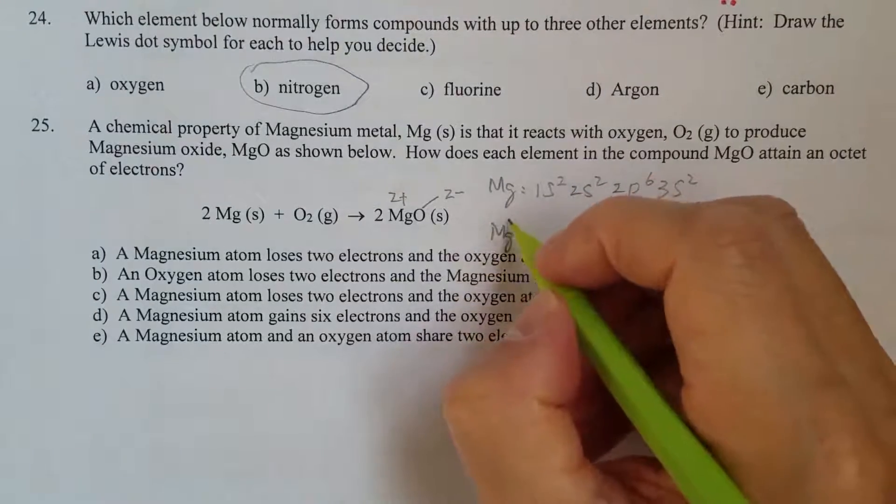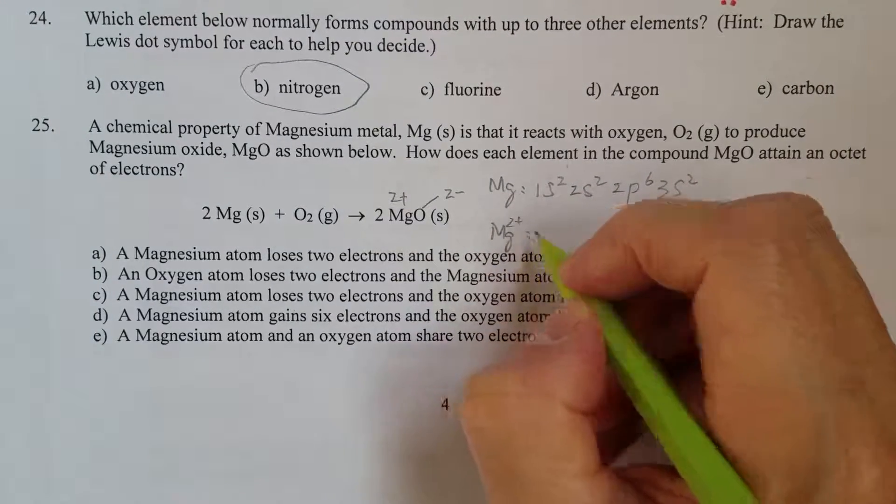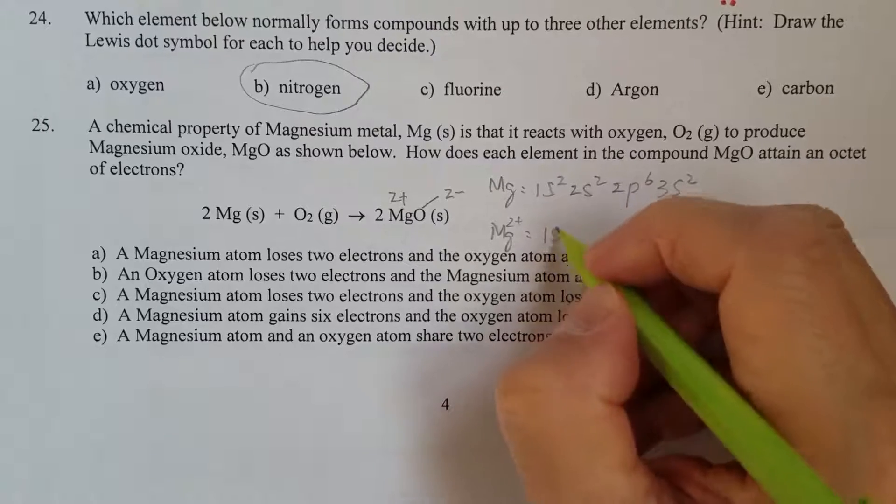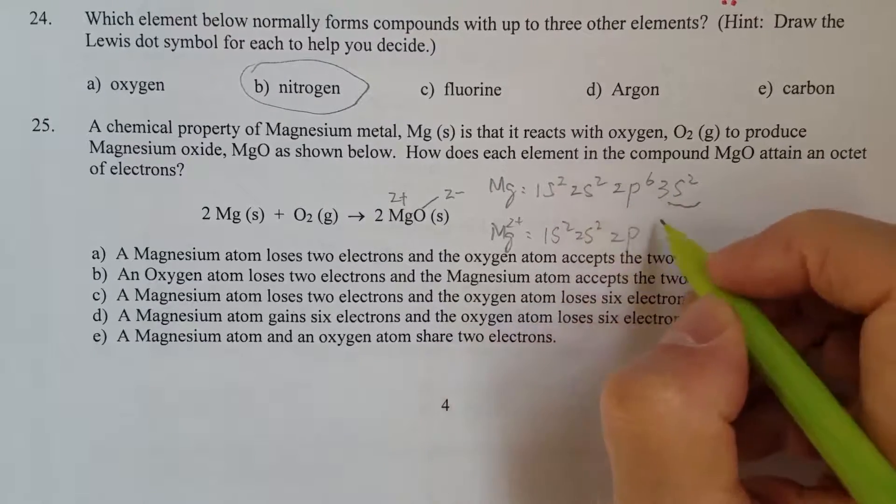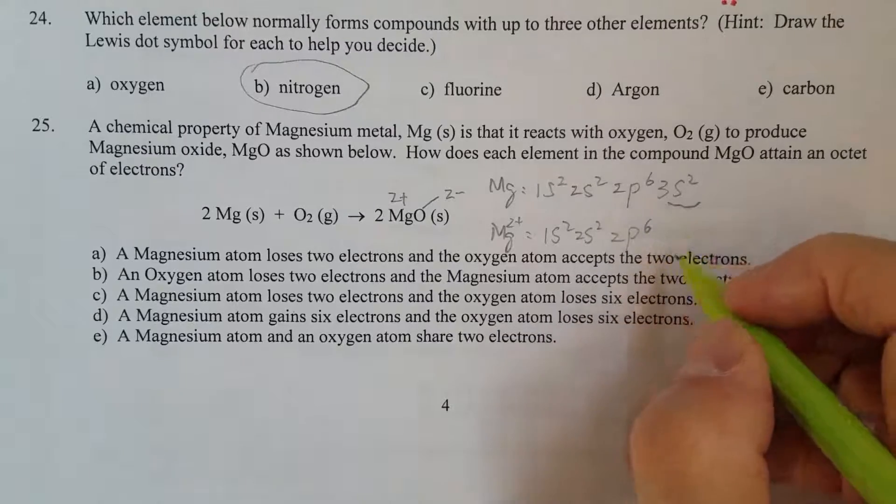Therefore, the electron configuration for Mg2+ is just 1s2, 2s2, 2p6.